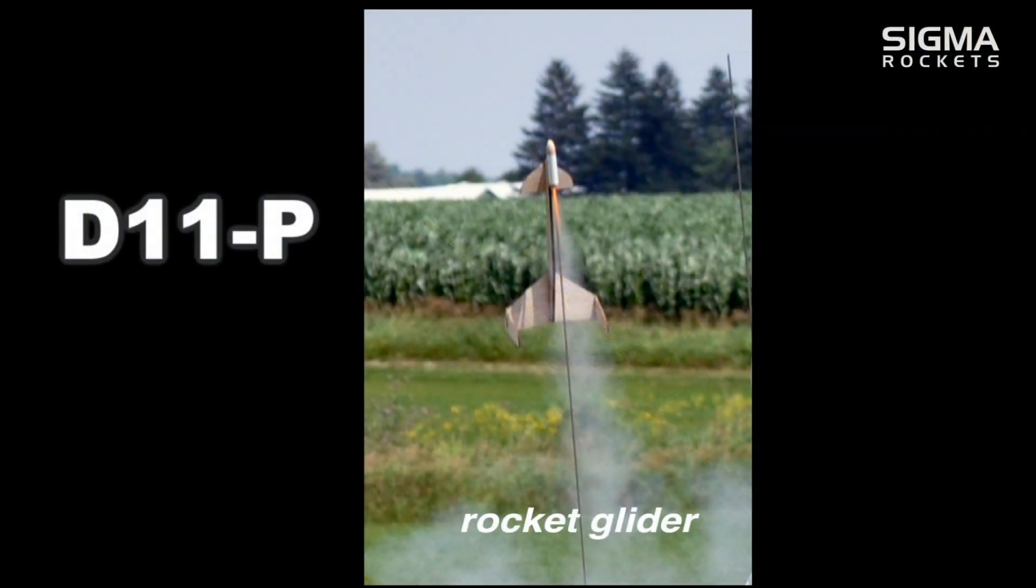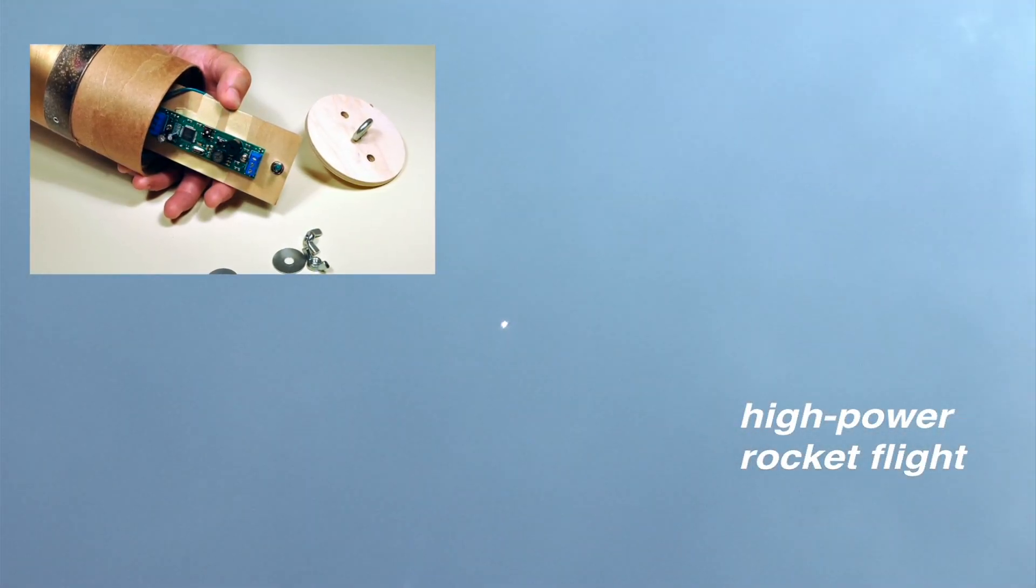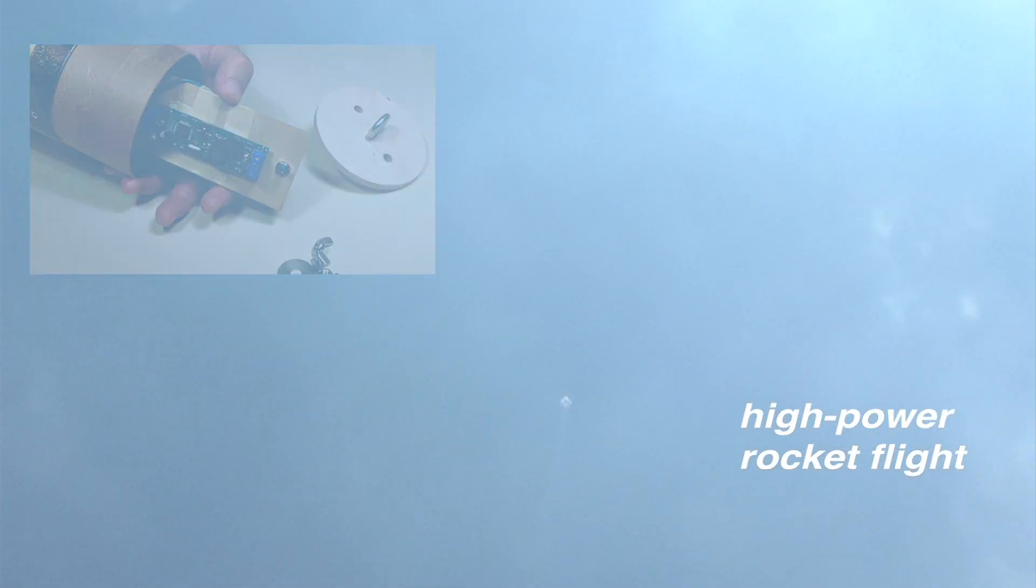In some cases, the motor may not have an ejection charge. This would be indicated with a P instead of a number. Such motors are used for rocket gliders and rockets where parachute deployment is controlled with electronics.